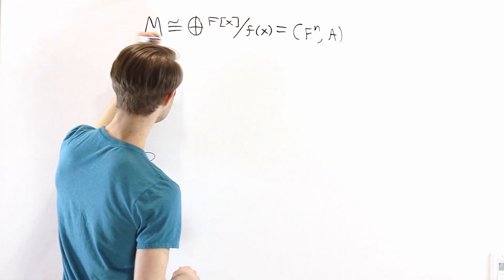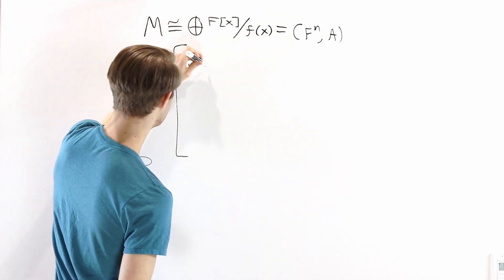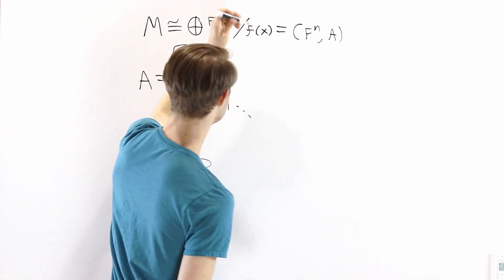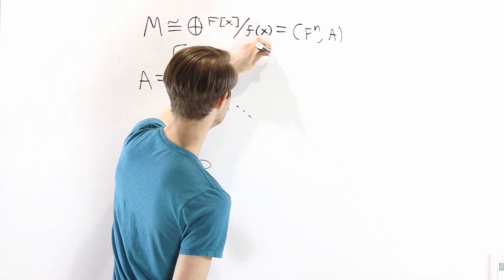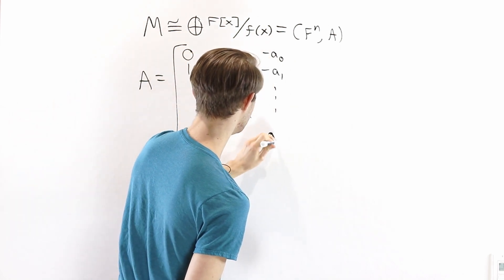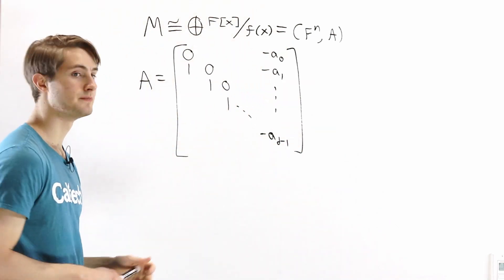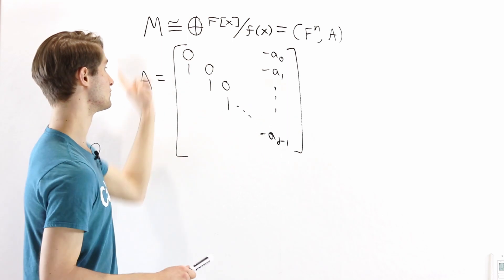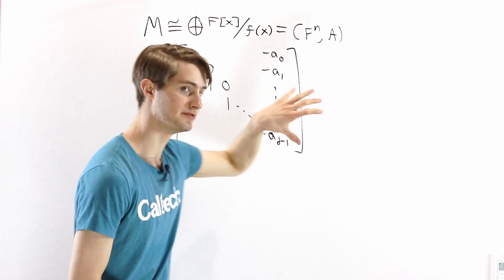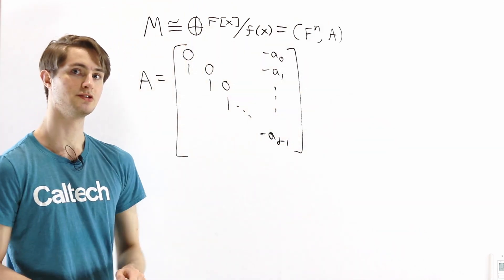In that case, we can write A in a very specific form. Along the diagonal we're going to have 0, 1, 0, 1, 0, 1, continuing on. At the very end we have negative A0, negative A1, all the way to negative A_{d-1}, where d is the degree of f(x). In reality, A is not just one of these blocks — it's a block matrix with a bunch of these down the diagonal. But I'll just consider one block for now.